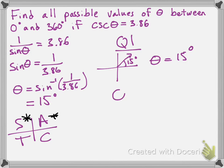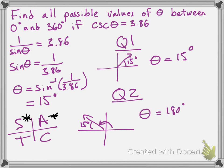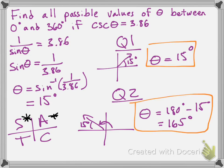In quadrant 2, we also have a related acute angle of 15 degrees. That means we are 15 degrees less than a 180-degree turn, so theta equals 180 degrees minus 15 degrees, which is 165 degrees. Therefore, all possible values of theta between 0 and 360 degrees, if cosecant of theta is 3.86, are 15 degrees and 165 degrees.